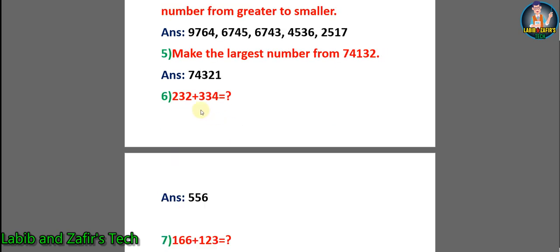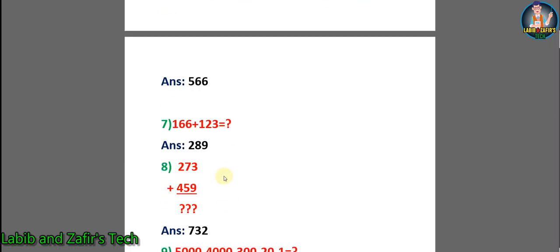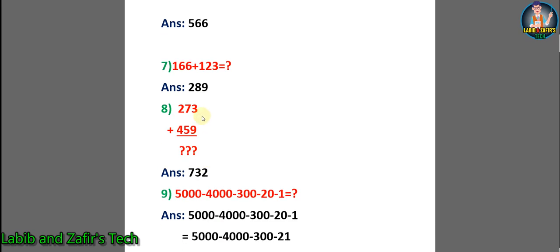Number 6: 232 plus 334. 4 plus 2 is 6, 3 plus 3 is 6, 3 plus 2 is 5. That is, 566. Number 7: 166 plus 123. 6 plus 3 is 9, 6 plus 2 is 8, 1 plus 1 is 2. Answer: 289. Number 8: 273 plus 459. If we add this, we will get 732.